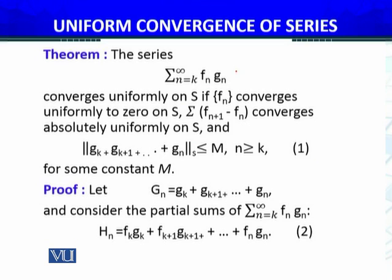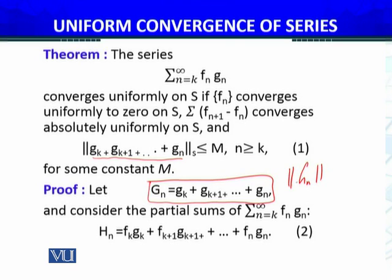First of all, we define Gn. Gn equals this expression, and if we transform inequality 1, it gives us that the norm of Gn on S is less than or equal to M. Because Gn is defined as gk plus gk+1 and so forth plus gn.